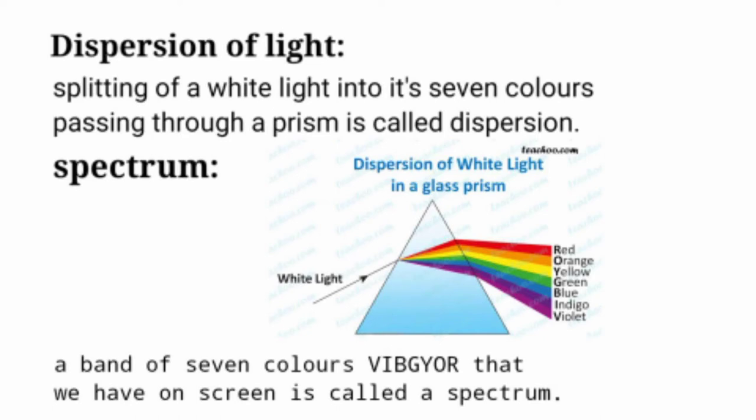Dispersion of light: Splitting of a white light into its seven colors passing through a prism is called dispersion.